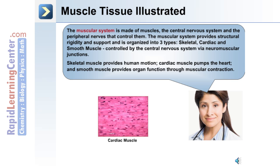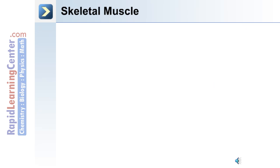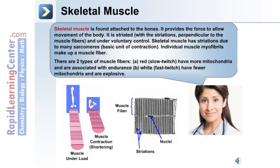Skeletal muscle provides for human motion, cardiac muscle pumps the heart, and smooth muscle provides organ function through muscular contraction. The first muscle type we'll discuss is skeletal muscle. The image on the left side of the screen shows the muscle under load, as in the extended arm with the weight in the hand, and the muscle contracted or shortened.